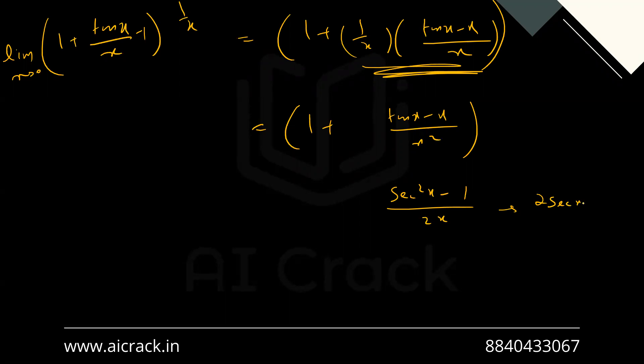We'll be getting 2 sec x dot sec x dot sec x dot tan x minus 0 divided by 2. Right. Now this term, if I put x equals to 0, this is a finite value, this is a finite value.